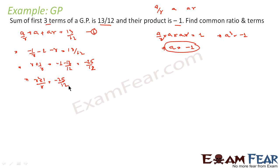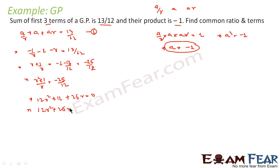Multiplying through by r, we get 12r² + 12 + 25r = 0, or 12r² + 25r + 12 = 0. We have this equation now. We factorize this as 12r² + 16r + 9r + 12 = 0.